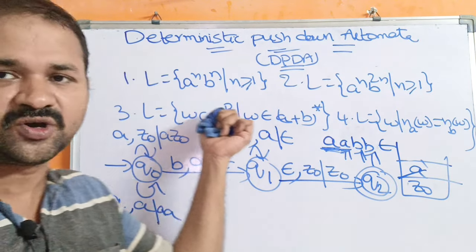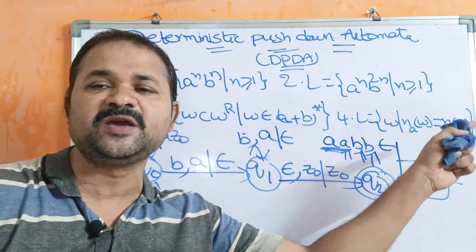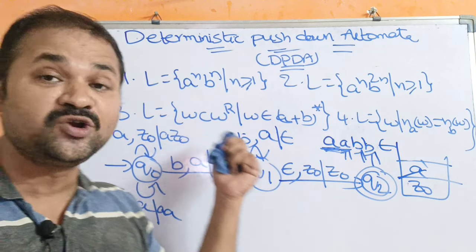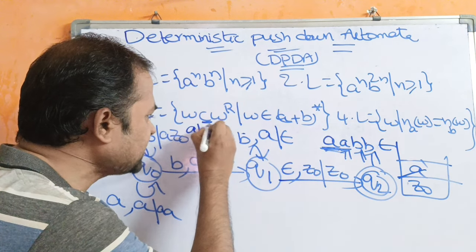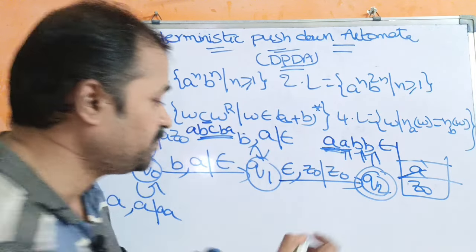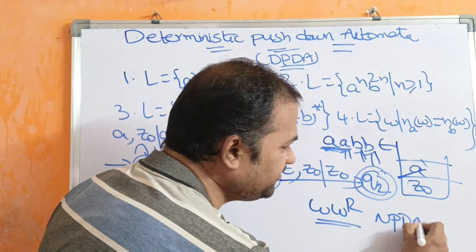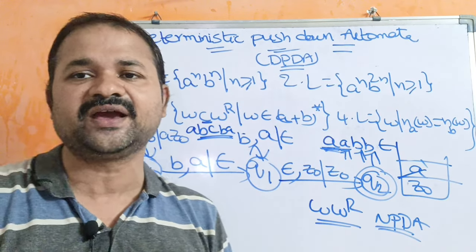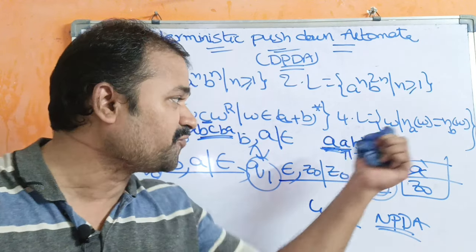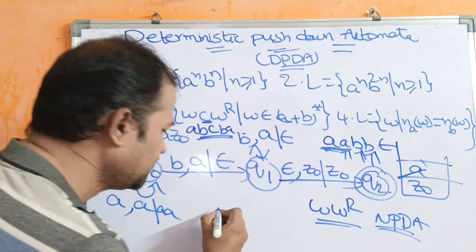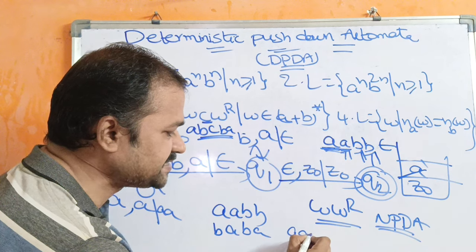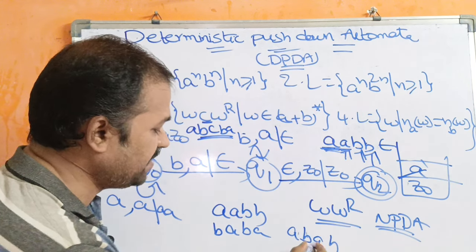We have already seen these four examples. The second example is A^N B^2N such that N ≥ 1, meaning N number of A's are followed by 2N number of B's. The third is WCW^R — for example, if W is AB, then the string is AB C BA, where C is the center marker. Odd palindromes of this form are DPDA, while W W^R (even palindrome) is NPDA. The fourth example, W such that N_A(W) = N_B(W), means the number of A's and B's in the string must be equal — for example, AABB, BABA, or ABAB all qualify.